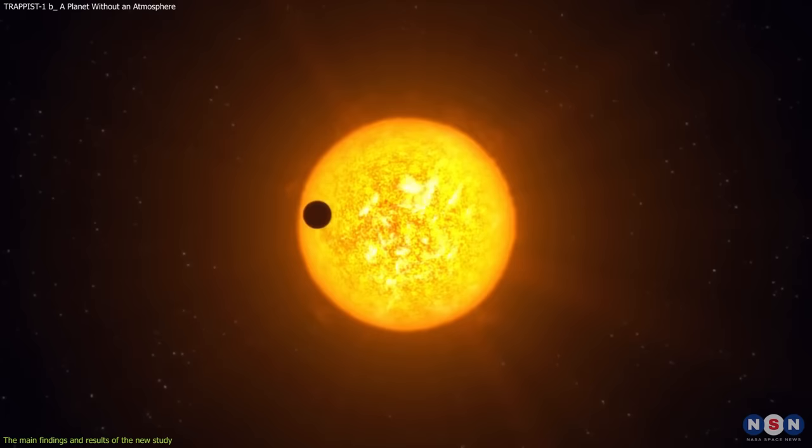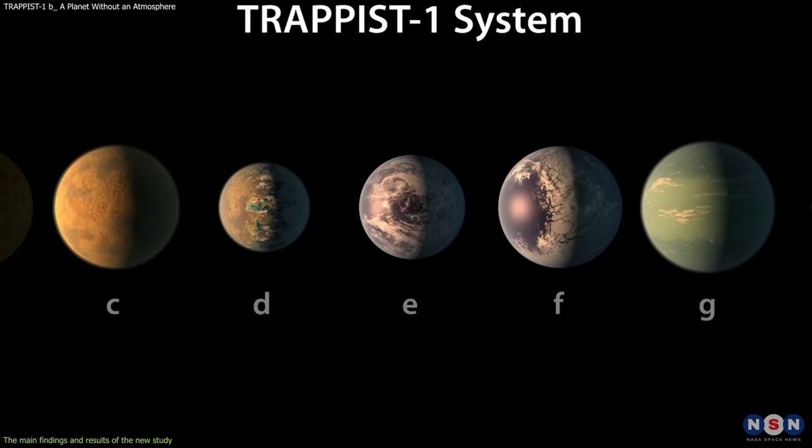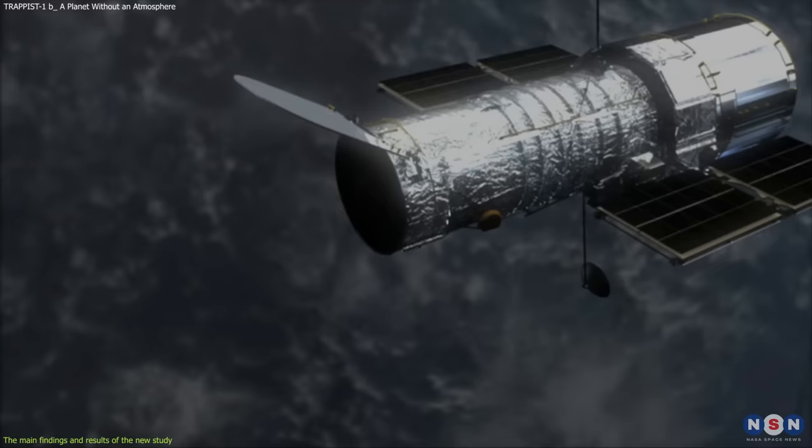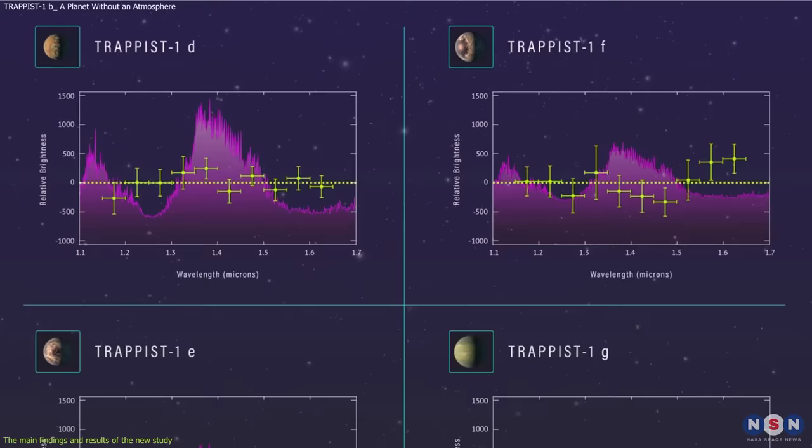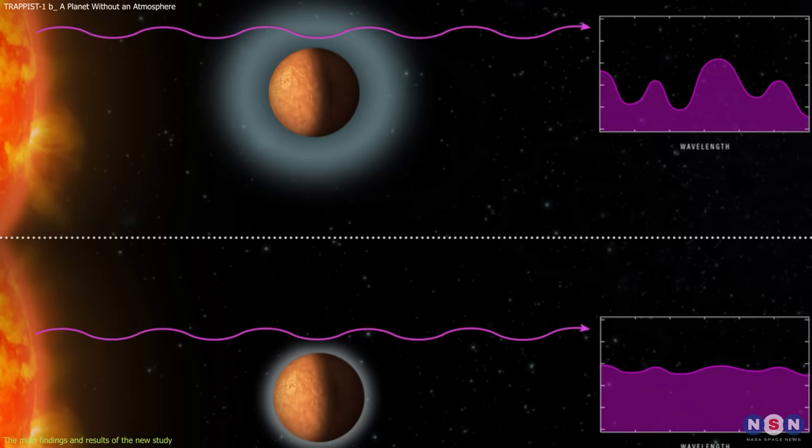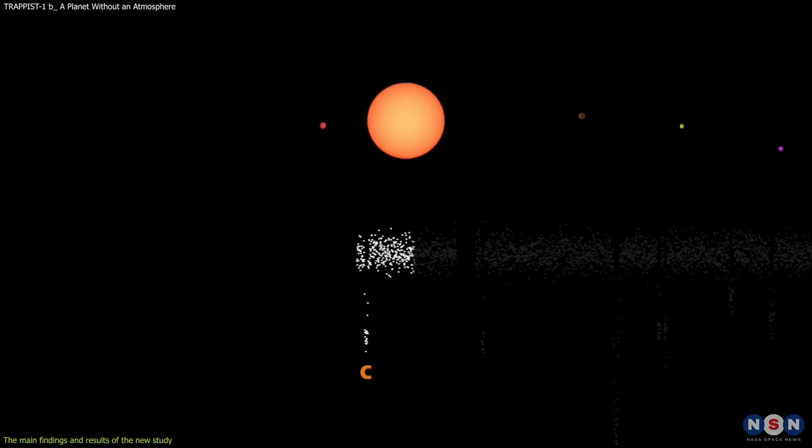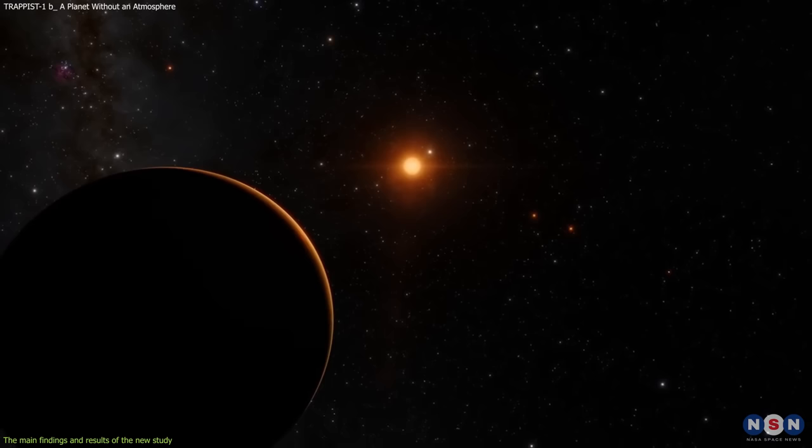This result contradicts previous studies that suggested that some of the other planets in the TRAPPIST-1 system, such as TRAPPIST-1d, E, and F, may have atmospheres that could support life. These studies used data from other telescopes, such as the Hubble Space Telescope and the Spitzer Space Telescope, which observed the planets at different wavelengths and with lower resolution and sensitivity than the James Webb. Previous studies detected some hints of atmospheric features, such as water vapor and methane, but they were also plagued by large uncertainties and noise.